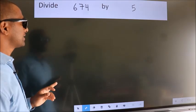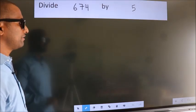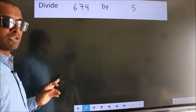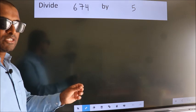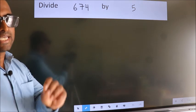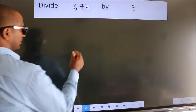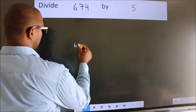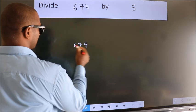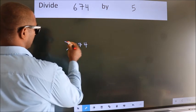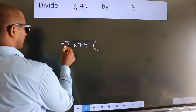Divide 674 by 5. To do this division, we should frame it in this way: 674 here, 5 here.